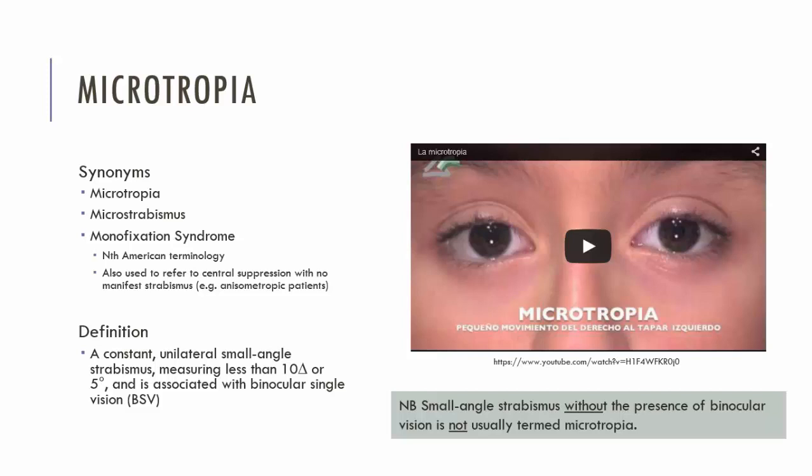Before we move on, I just want to talk about the synonyms. Microstrabismus and microtropia are interchangeable terms. You can also distinguish the direction of the deviation — you could indicate that the patient has a microesotropia or a microexotropia.